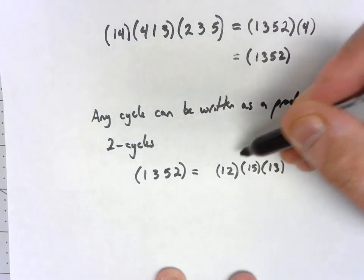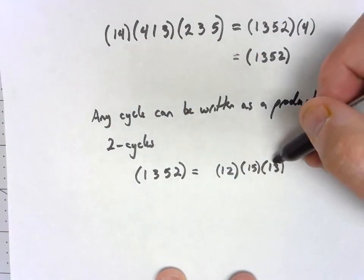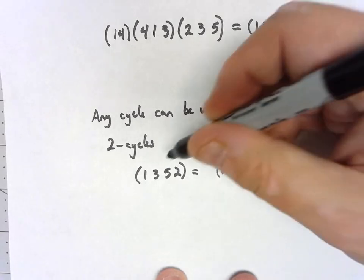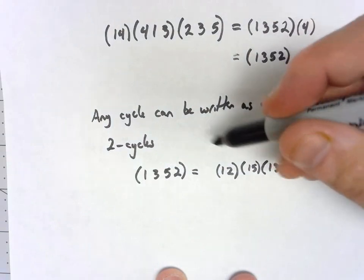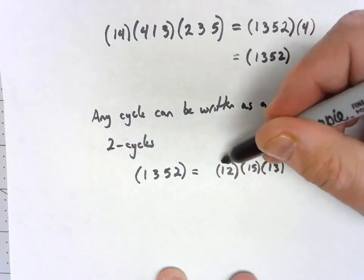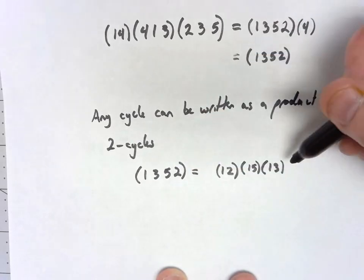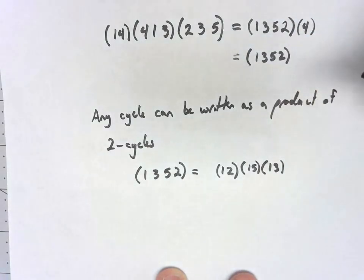Now let's think about how this works. 1 goes to 3, then 3 isn't affected by any of those cycles, so 1 goes to 3. 3 goes to 1, but then 1 goes to 5, and then 5 isn't affected, so 3 ends up going to 5. 5 isn't affected by this, 5 goes to 1, 1 goes to 2, so 5 goes to 2. 2 isn't affected by this, 2 goes to 1, and that closes our cycle.